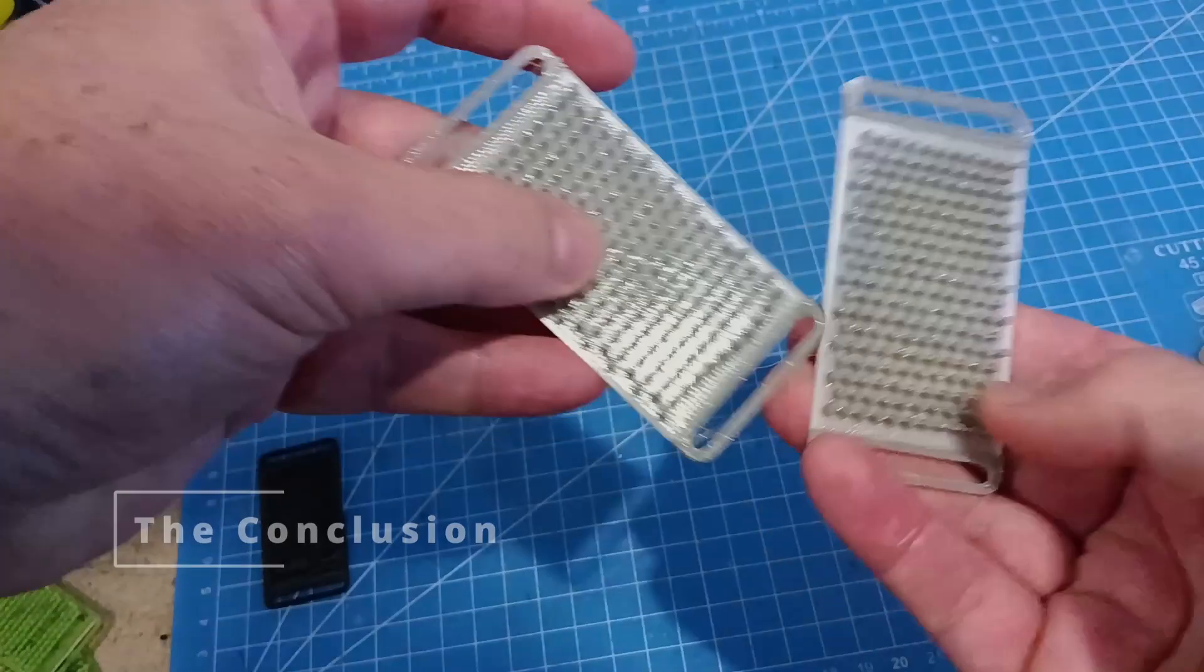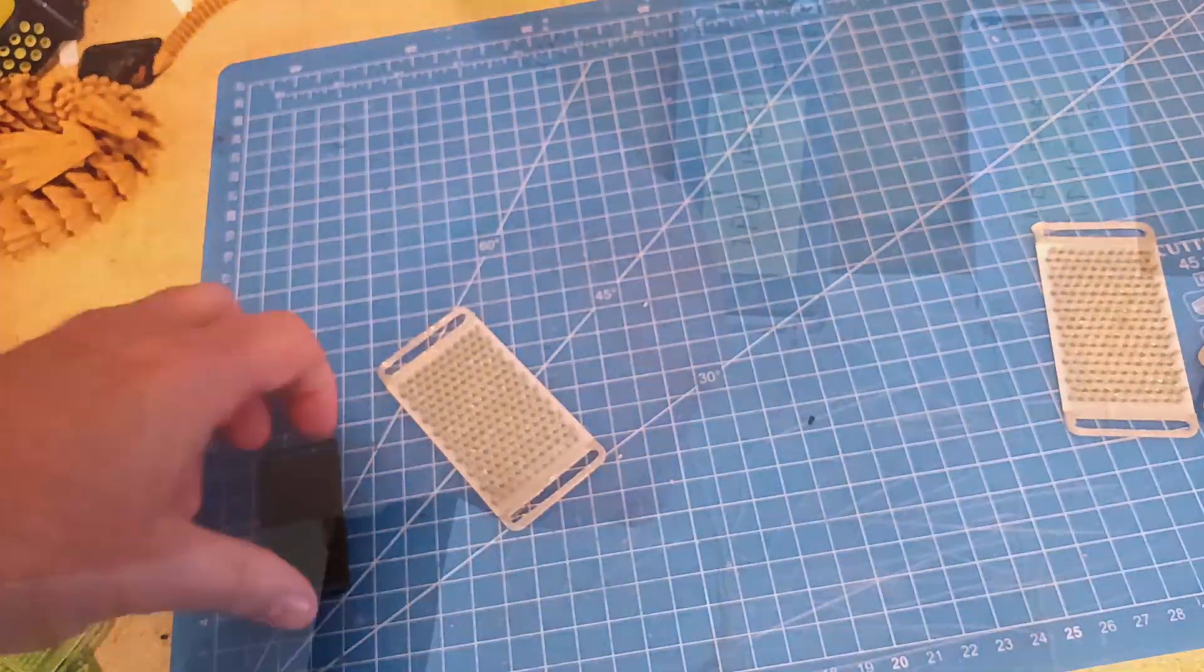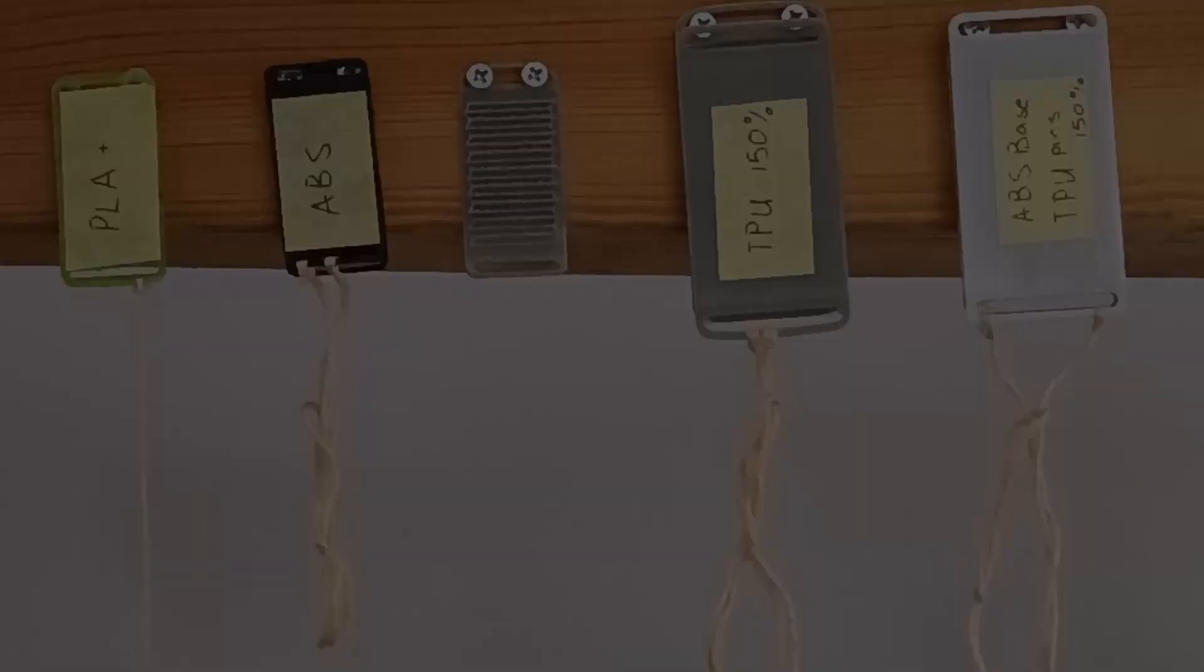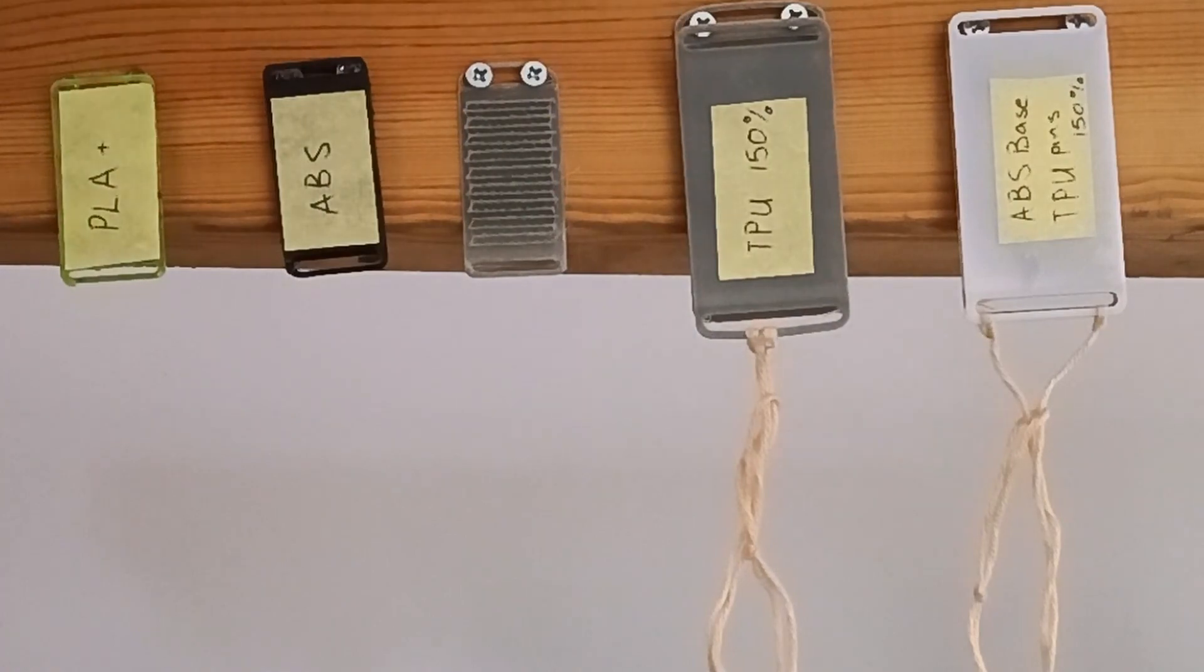So the final conclusion if you're printing this one: the harder base of the PLA with the final base layer and pins in TPU worked brilliantly and that's definitely how I'd recommend to print this specific model. I'd also go for the extra size at 150%.